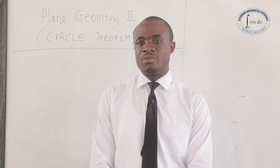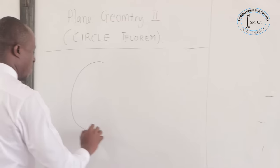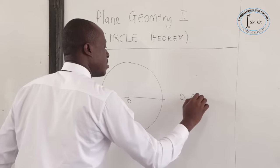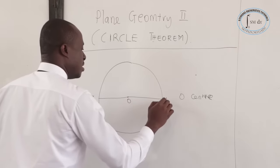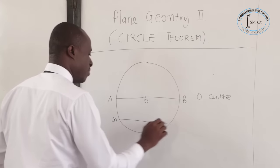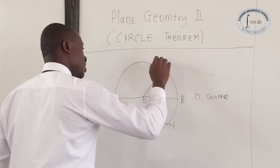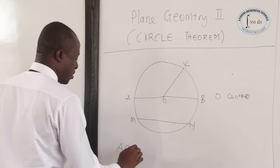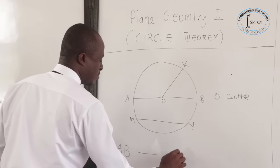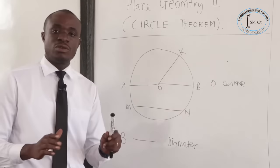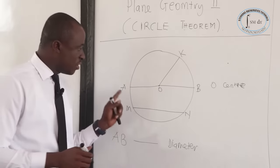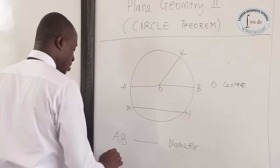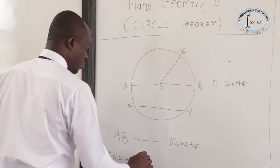Now let's consider a circle and label the parts. If you have a circle, O is the center. Now this is line AB. We have MN, and also OK. Any line which passes through the center — line AB — we call the diameter. Any line which divides a circle into two equal parts is called a diameter, and because O is the center, we see line AB is a diameter.